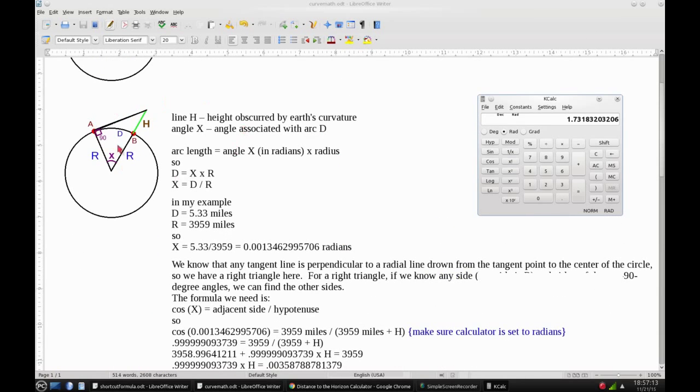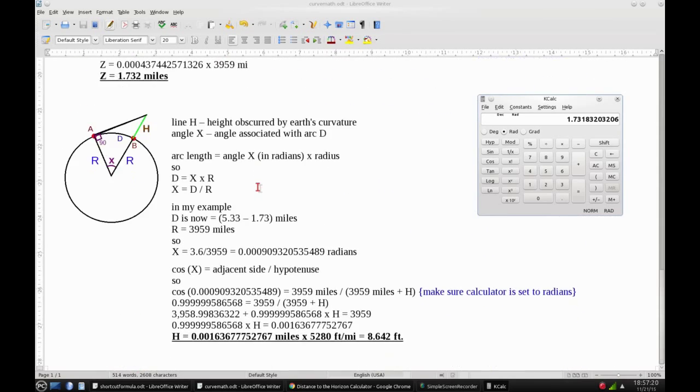So now we just need to redo this with 5.33 minus 1.73 instead of just using 5.33. So let's do that real quick. So again, we're going to solve for X. So X equals D divided by R.